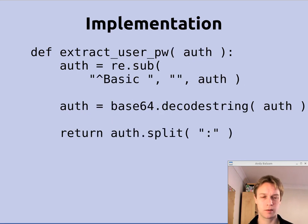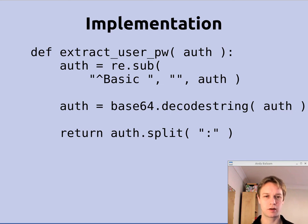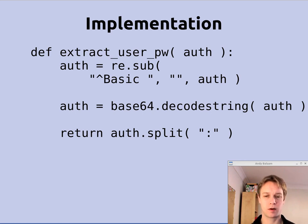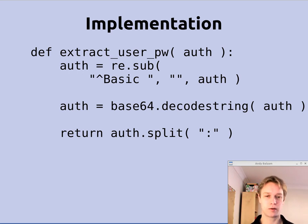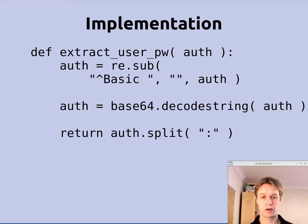Let's look at the extractUserPW function. It takes in the authorization data from the request, does a tiny bit of regex to strip off the string 'Basic ' at the beginning of the string, then uses the Python standard function base64.decode_string to unmangle the username and password so it comes out as 'username:password'. Then we just do a split on the colon and return the username and password.